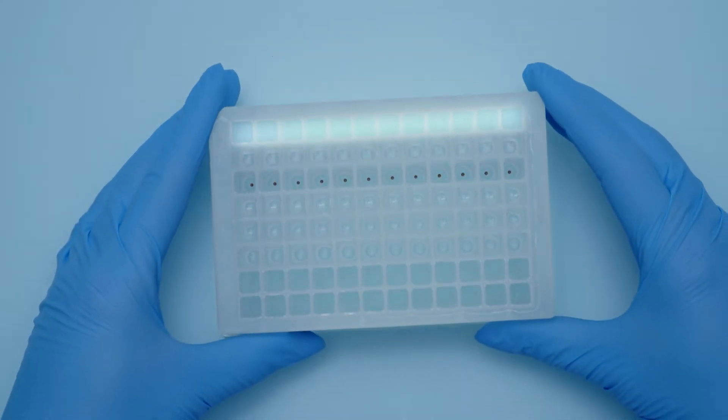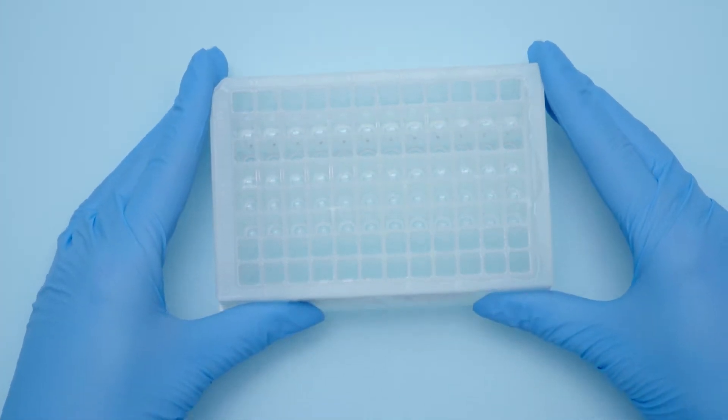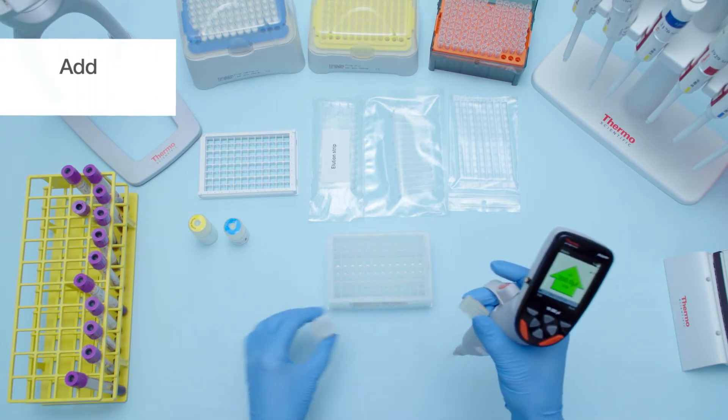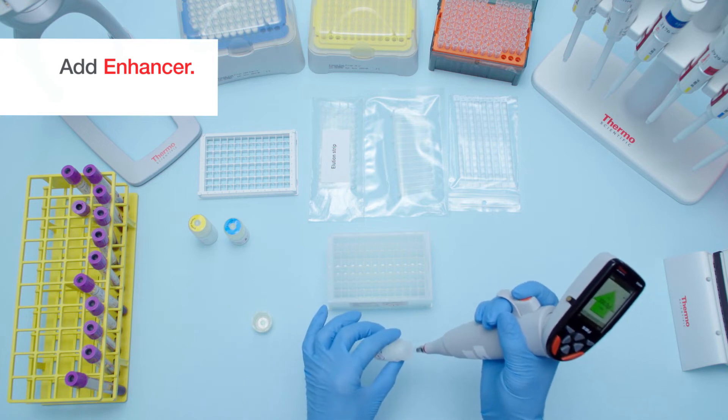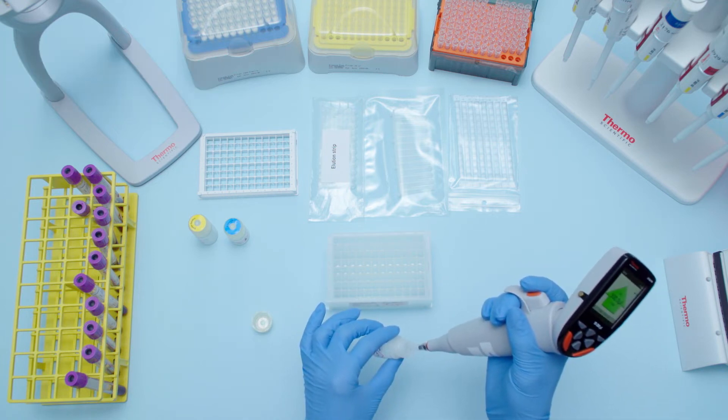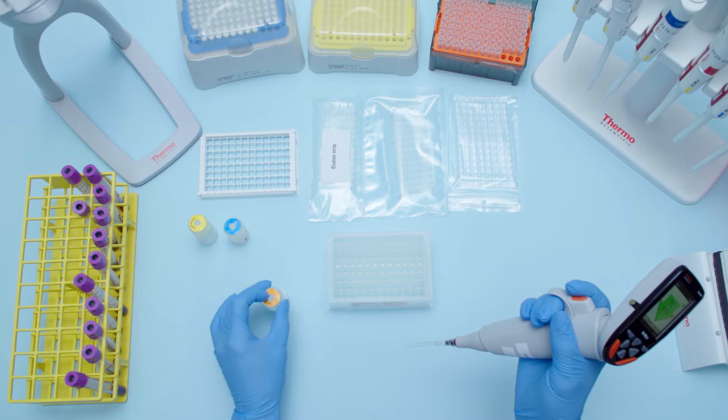Row A is empty and will serve as the sample input row. For blood samples, add Enhancer, up to 400 microliters of blood, and PK to row A before loading the plates on the Kingfisher Duo Prime.